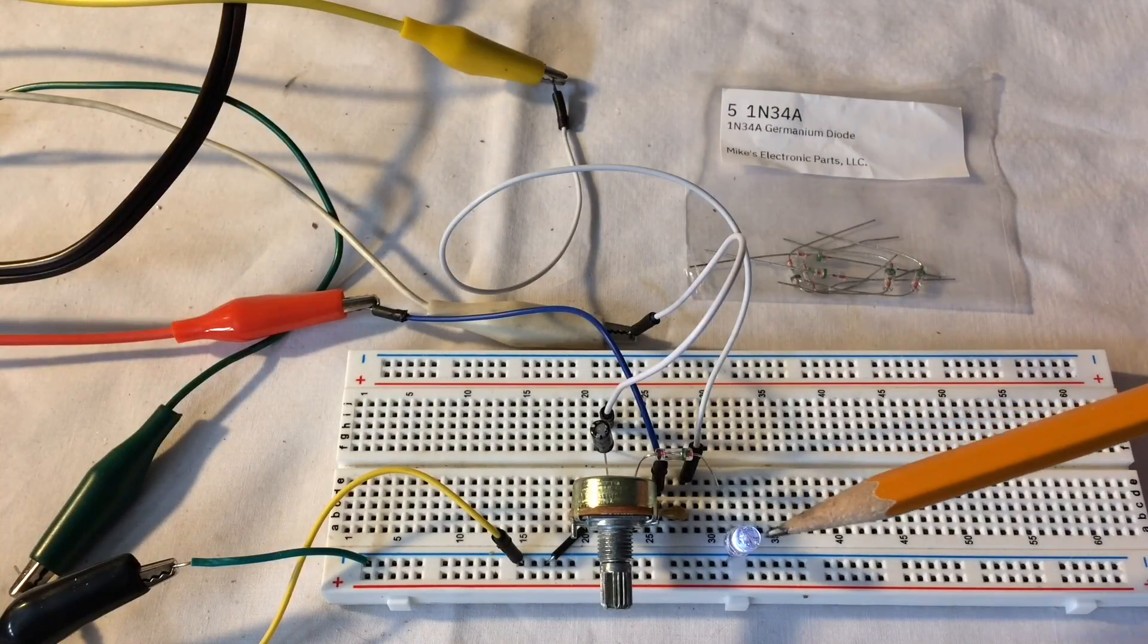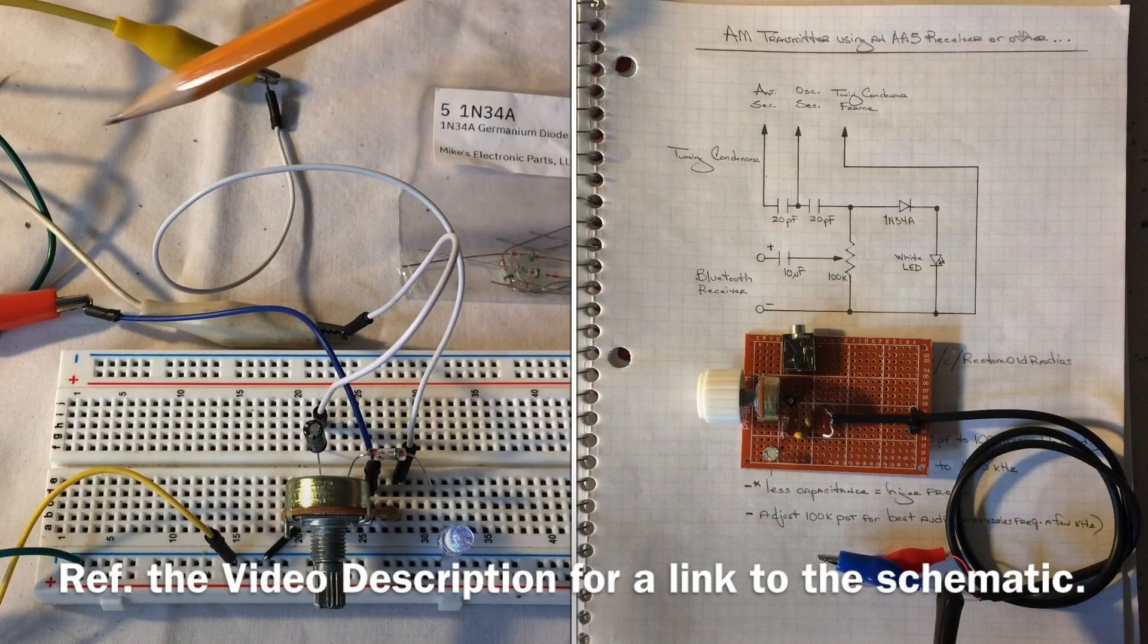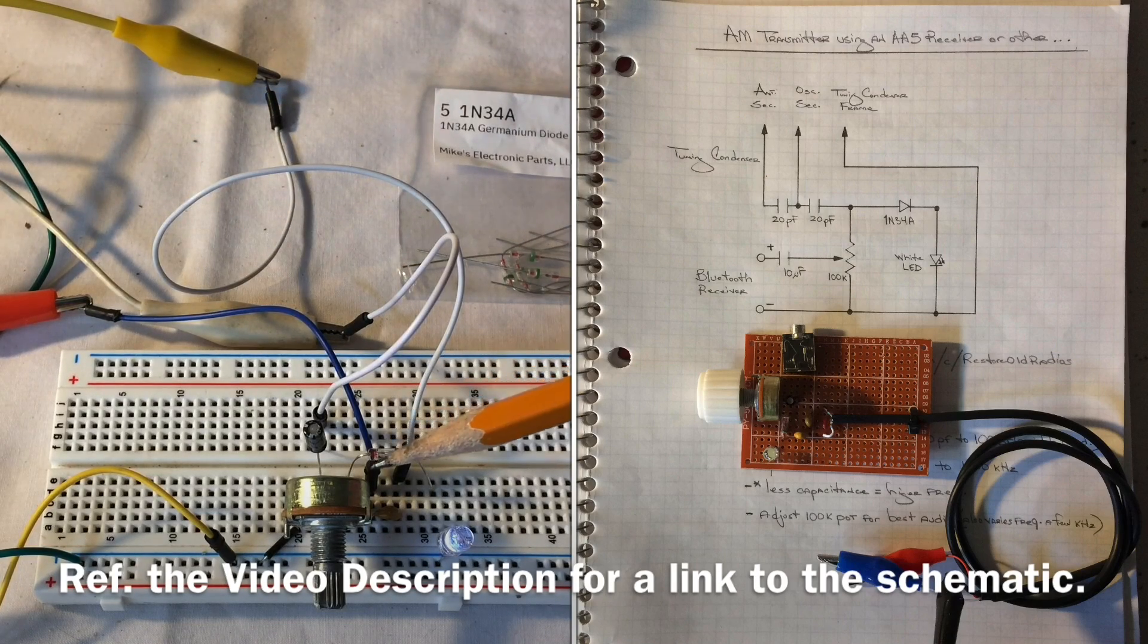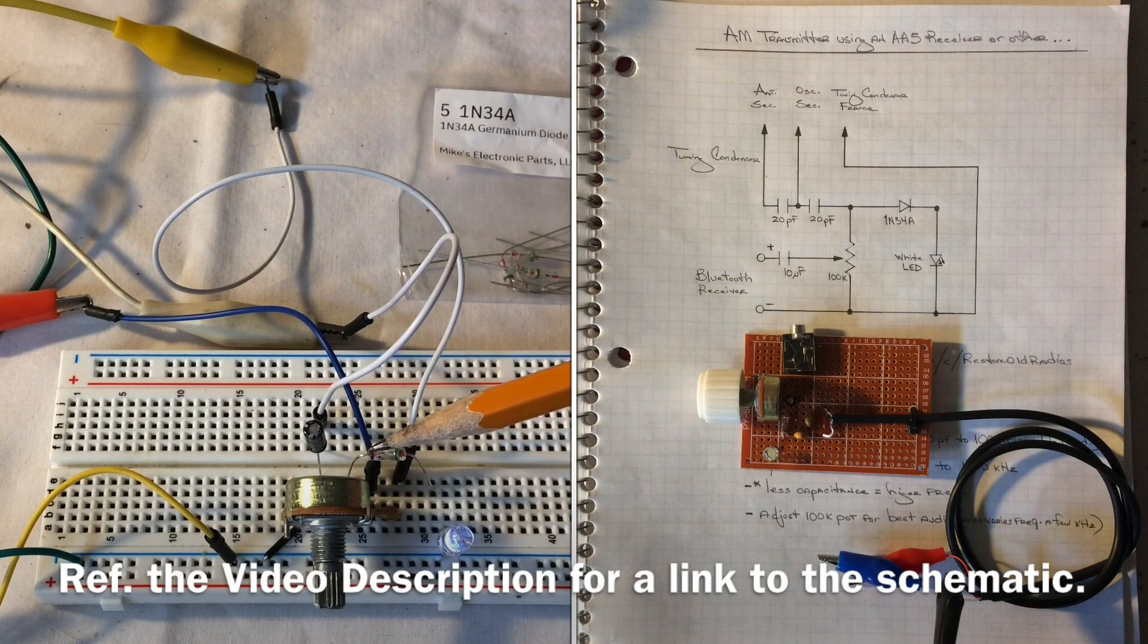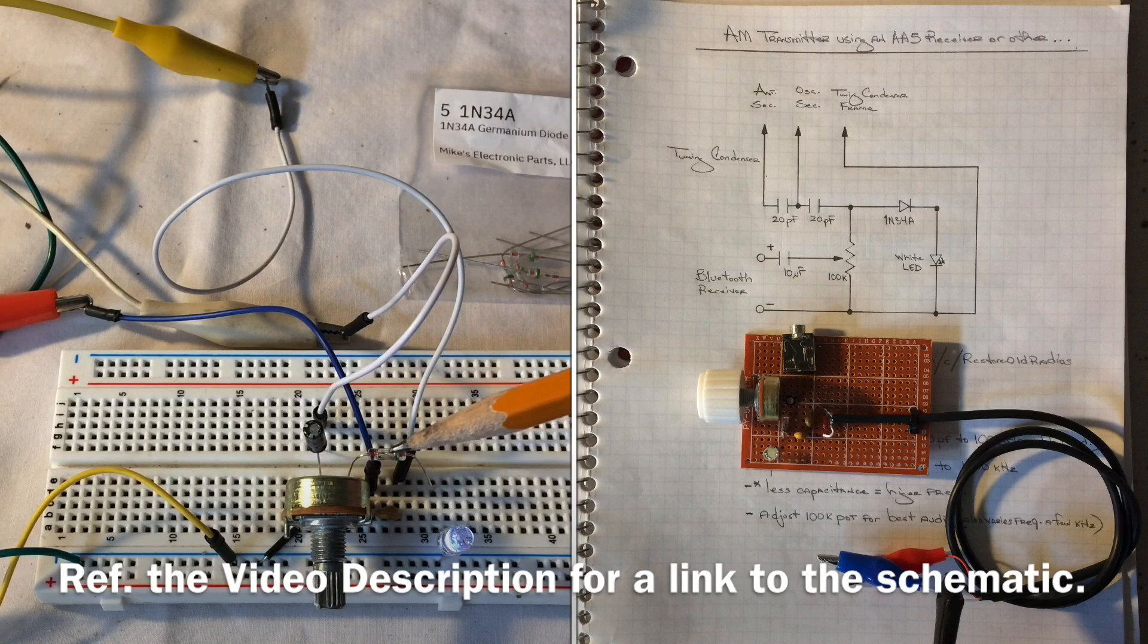Here's a look at my as-built design. You can see my audio input source coming from my Bluetooth, comes into the wiper of the 100k potentiometer, and of course you have the negative rail itself.